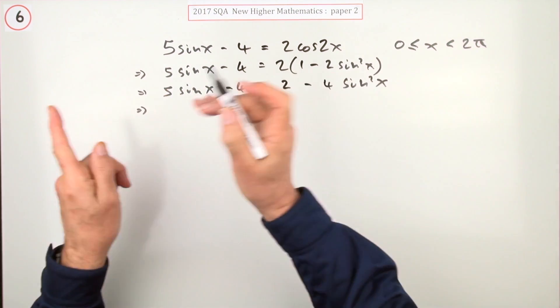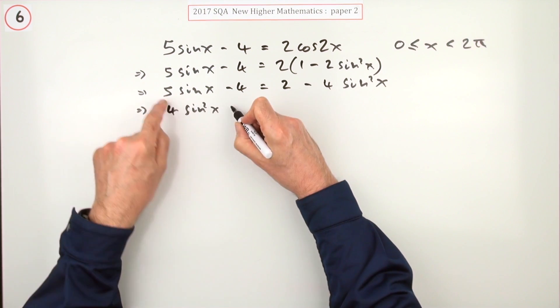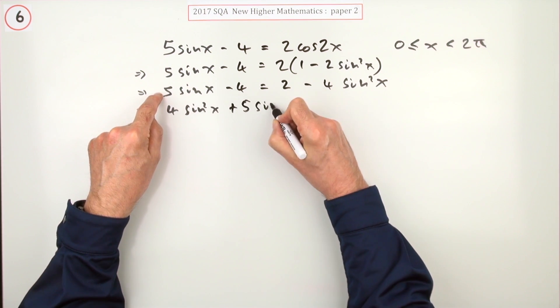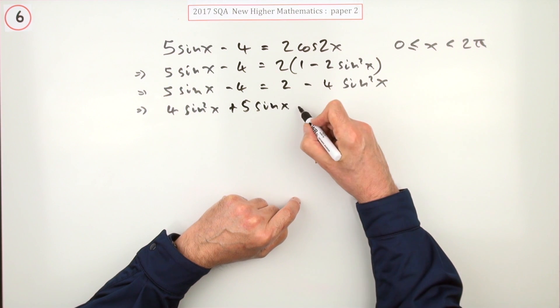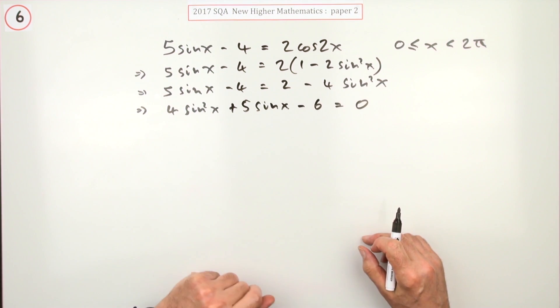So bringing it all over to this side, I'll have 4sin²x + 5sinx, which was taking two across and subtracting it, minus 6 equals zero. That's the quadratic in sinx that you need to solve.